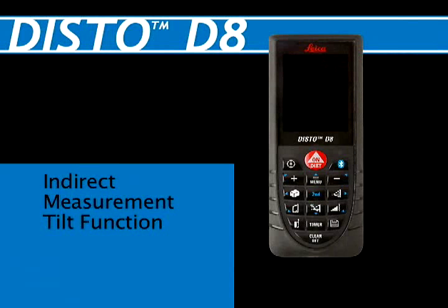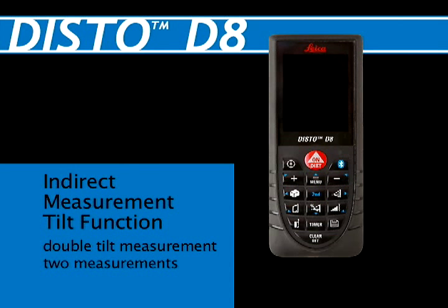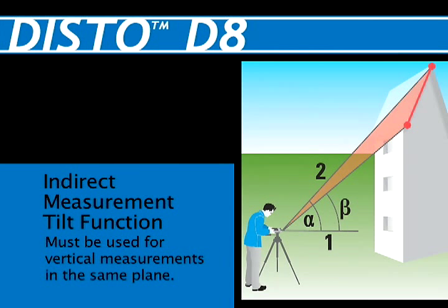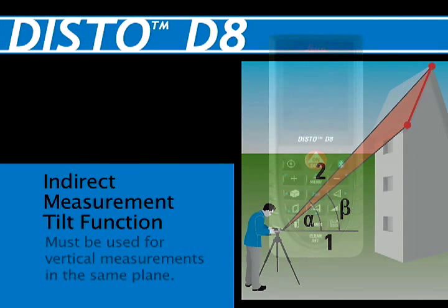Indirect measurement: tilt function. Double tilt measurement with two measurements. Example: measuring the length of an angled roof rafter. Note: this feature uses the internal tilt sensor to determine the angle, and therefore must be used for measurements in the same plane.